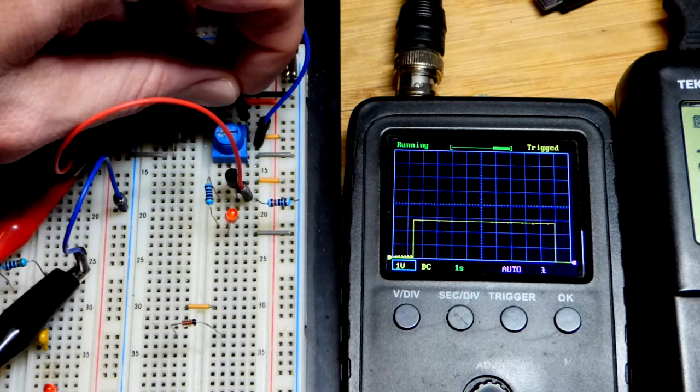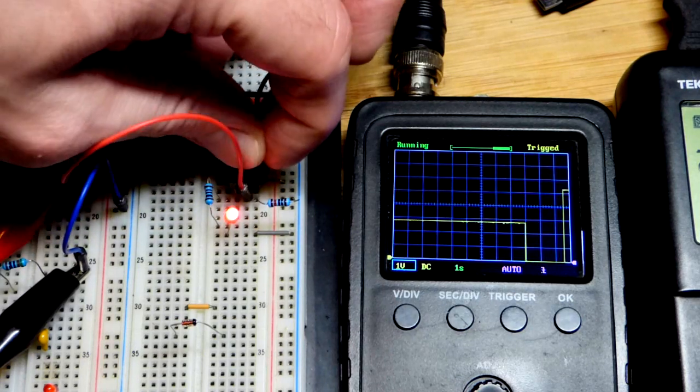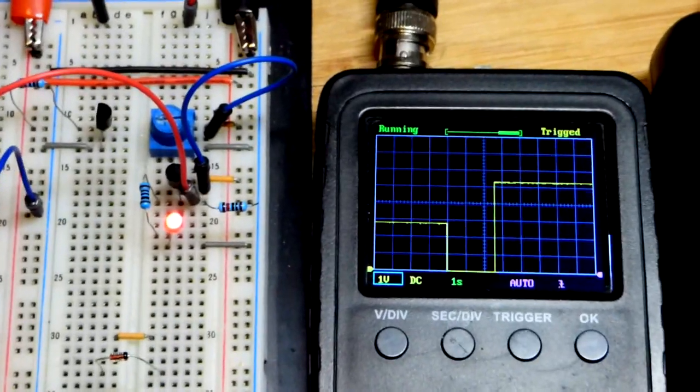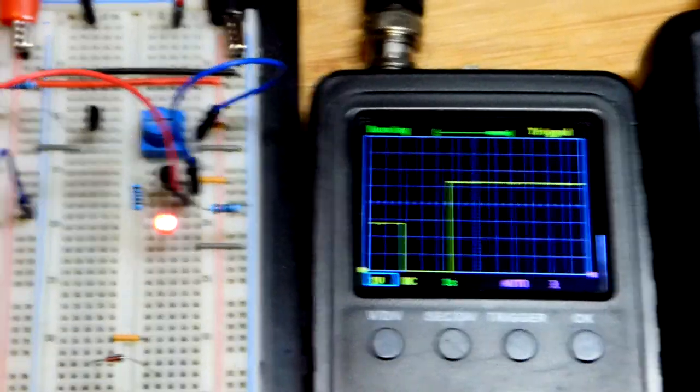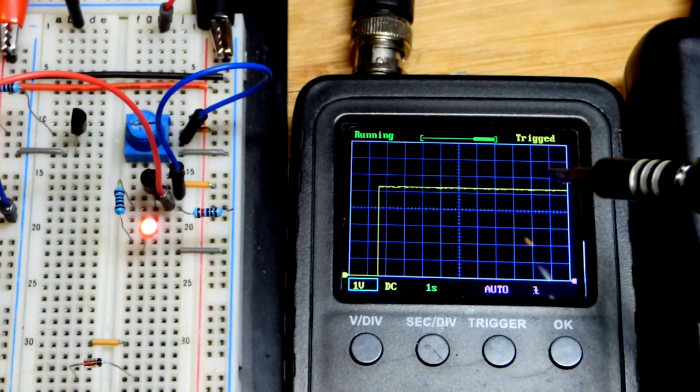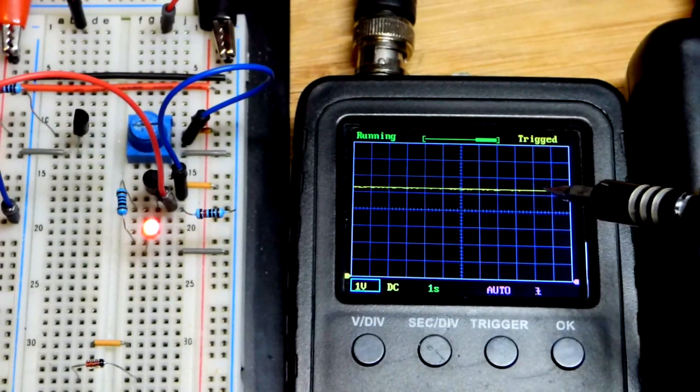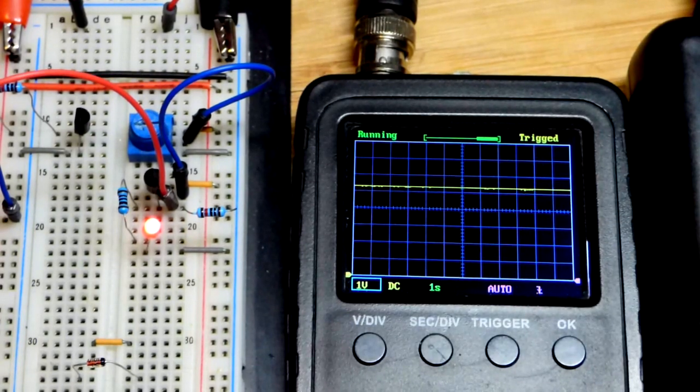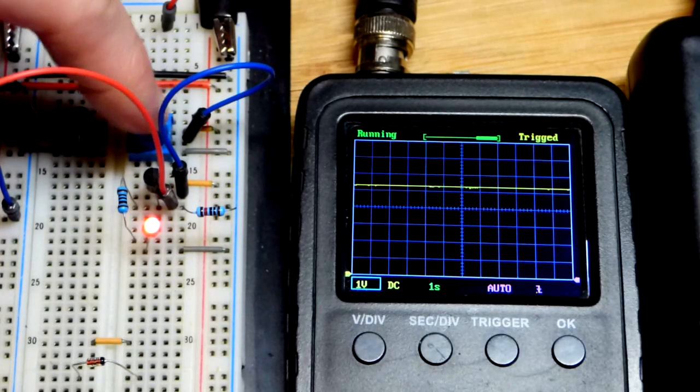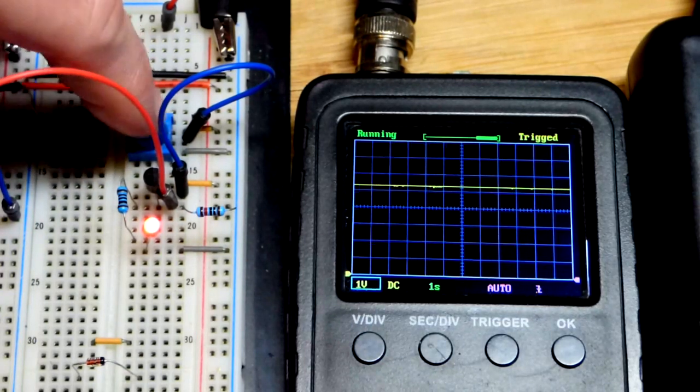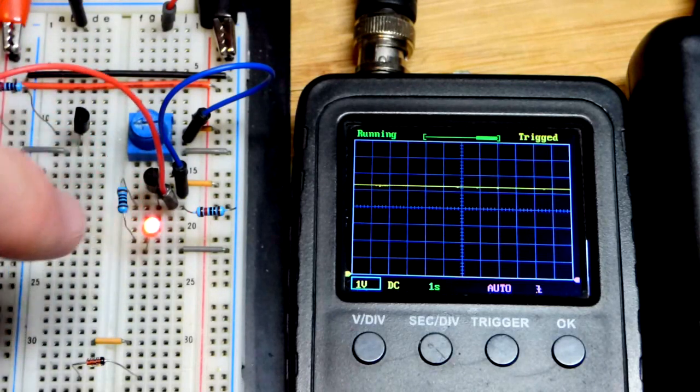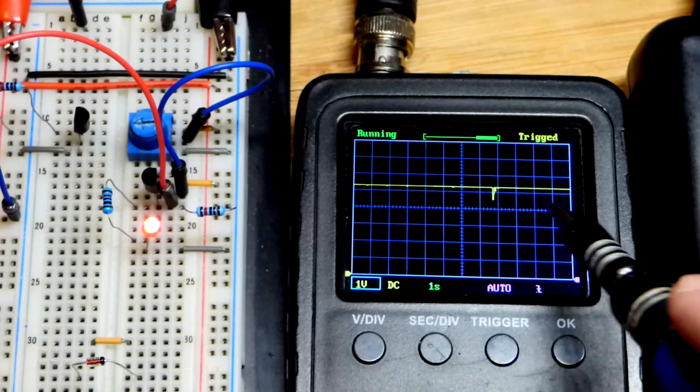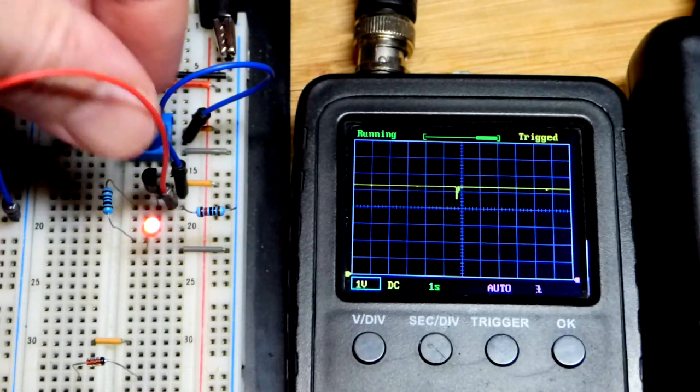If I move the output of the trim pot to the base of the NPN bipolar junction transistor, as we did in a couple videos, you can see we got the six volts, but we're losing about 0.6 to 0.7 volts thanks to the base to emitter diode drop. For whatever reason, let's say we want the exact voltage or pretty close to the exact voltage of the trim pot across the load.